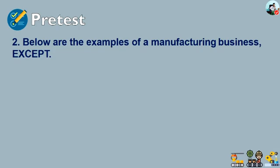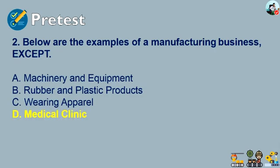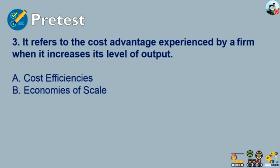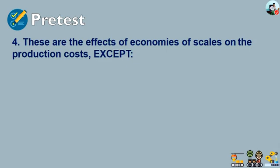Next question: below are the examples of a manufacturing business except — A) machinery and equipment, B) rubber and plastic products, C) wearing apparel, or D) medical clinic. The answer is letter D, medical clinic. Question number three: it refers to the cost advantage experienced by a firm when it increases its level of output — A) cost efficiencies, B) economies of scale, C) budget constraints, or D) production costs. The right answer is letter B, economies of scale.